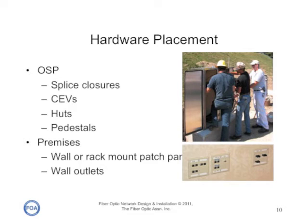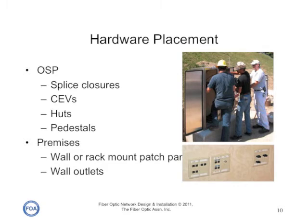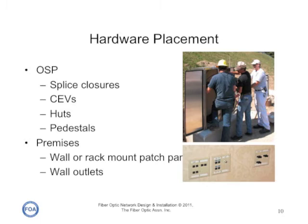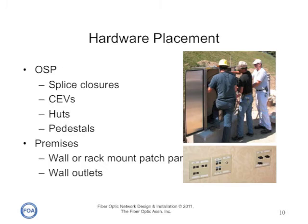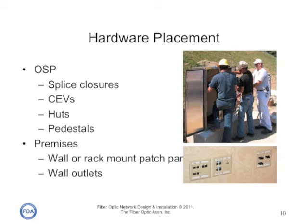A typical fiber optic link requires a lot of hardware. In the outside plant, it's splice closures, controlled environment vaults, regeneration huts, and pedestals. In premises networks, it's wall and rack-mounted patch panels, wall outlets, and cable trays. The type of hardware we need and the location of that hardware is a very essential part of every network design, and it's one of the reasons it's important that you do a site visit — so you know exactly where everything is and you've got pictures to refer back to for your design project.